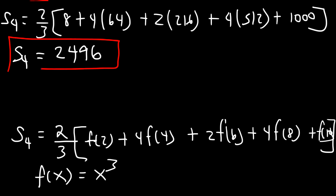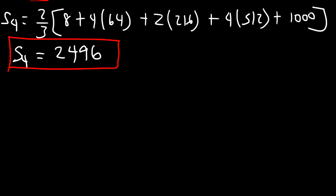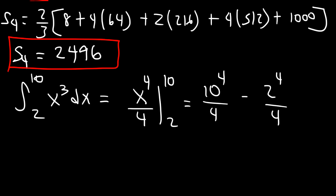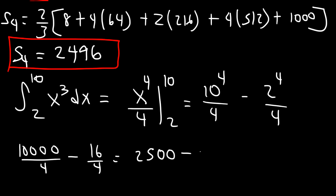Now let's calculate the exact value of the definite integral using integration. We integrate x³ dx from 2 to 10. The antiderivative of x³ is x⁴ divided by 4. Plugging in: 10⁴/4 minus 2⁴/4. 10⁴ = 10,000 and 2⁴ = 16. So 10,000/4 = 2500 and 16/4 = 4, giving 2500 minus 4 = 2496.